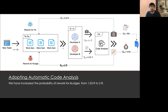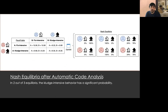Now that we confirmed the software process anomaly, we can move to the third step of GetPi and use the game theoretic model to explore potential solutions. An initial attempt would be to make kludges more expensive by making them more likely to require rework. We can try to adopt a post-commit analysis with an automatic tool like Pimbox that can detect problematic code. Let's assume that adopting such a tool would increase the rework probability for kludges from 1.05R to 2R.